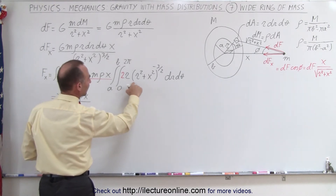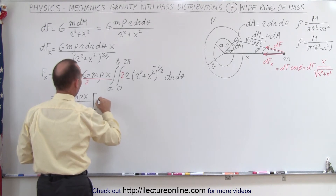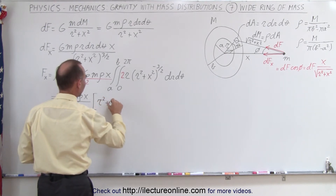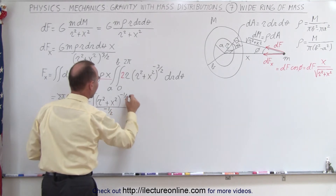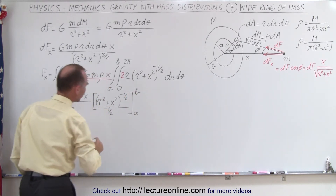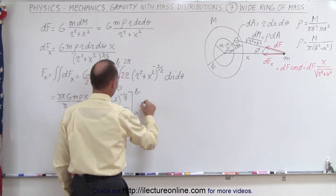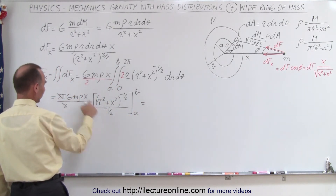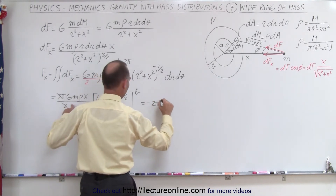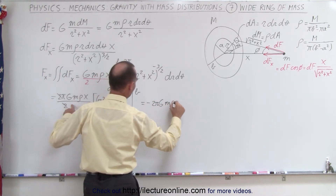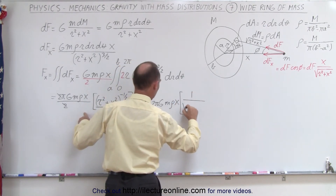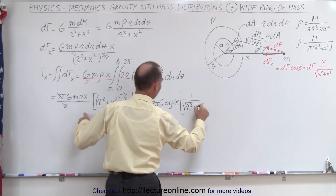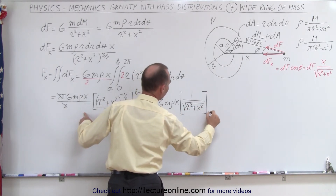Integrating the remaining expression, we add one to the exponent −3/2 to get −1/2, and divide by −1/2, yielding (r² + x²)^(−1/2). Evaluating this from a to b, the result becomes −2·GM·ρ·x times 1 over √(r² + x²), evaluated from a to b.